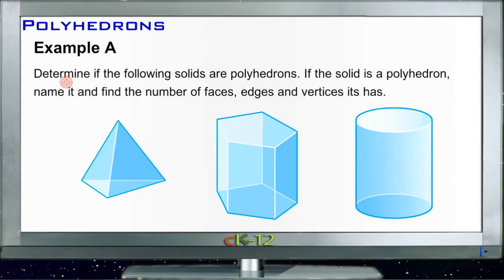Alright, Example A says we need to determine if the following solids are polyhedrons. If the solid is a polyhedron, we need to name it and find the number of faces, edges, and vertices it has.